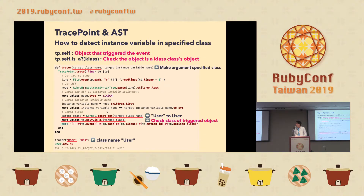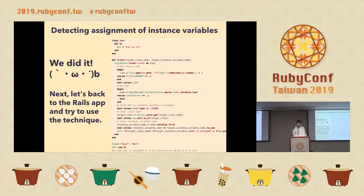We have the tp object. tp.self gets the object that triggered the event. We check whether the object is an instance of the target class. So we make an argument to specify the class and check the class. So we did it — we made code to detect assignment of instance variables. Next, let's go back to the Rails application and try to use this technique.